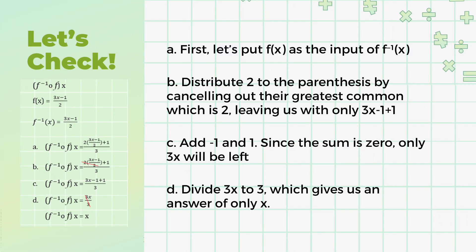Now let's put f(x) as the input of f inverse of x. Let's distribute 2 to the parenthesis by canceling out the greatest common factor between 2 and (3x minus 1) over 2, which is 2, leaving us with only 3x minus 1 plus 1. By adding negative 1 to positive 1, it results in 0, so only 3x will be left. Divide 3x by 3, which gives us only x. Hence, we can confirm that our answer is correct.